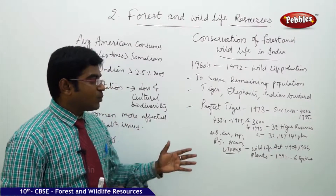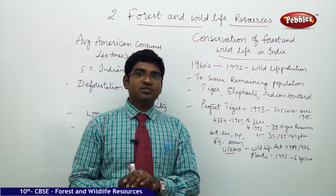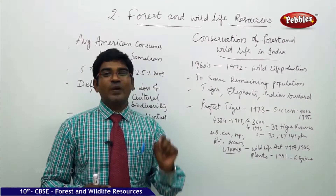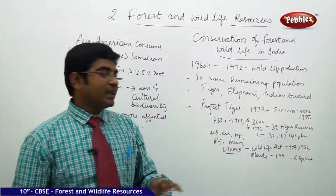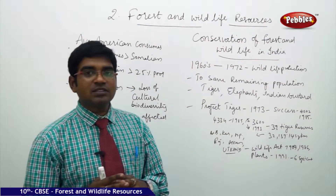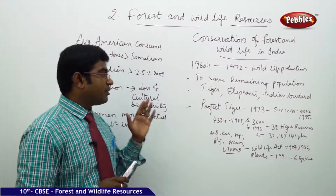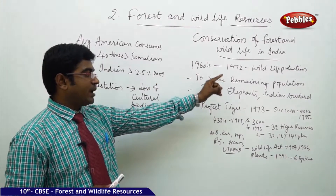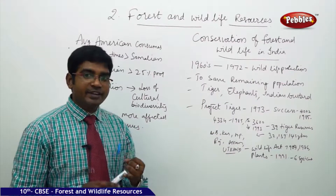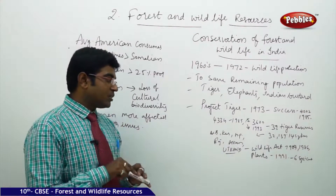In 1991, it was recognized that not only animals but plants also need to be saved, as plants are also becoming extinct and vulnerable. Six varieties of plant species were added in the 1991 act as an addition to the wildlife protection. So the government of India initiated the conservation of forest and wildlife through different acts from 1960 to the 1972 act, the 1973 Project Tiger, the wildlife acts of 1980 and 1986, and plant protection through the act of 1991.